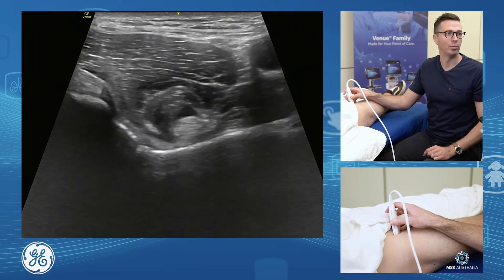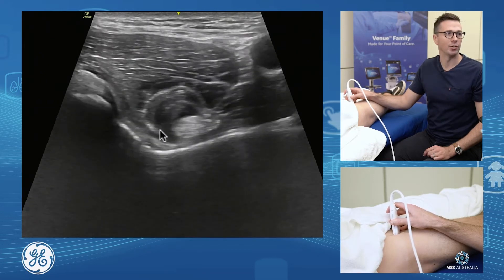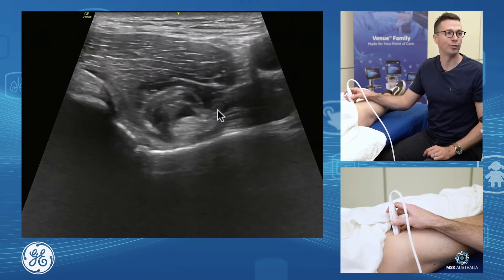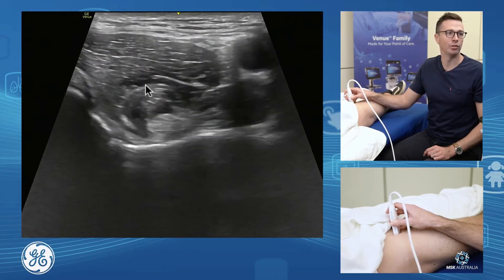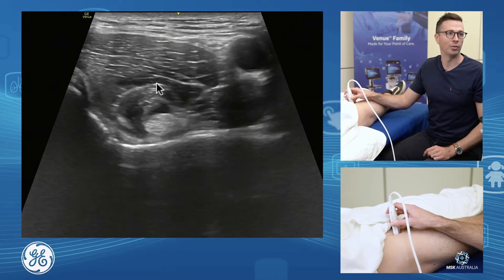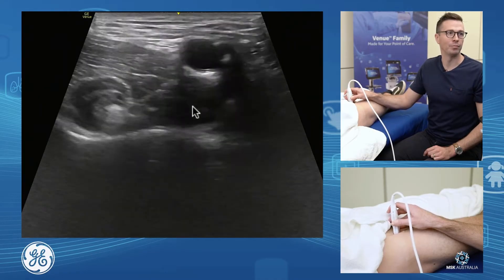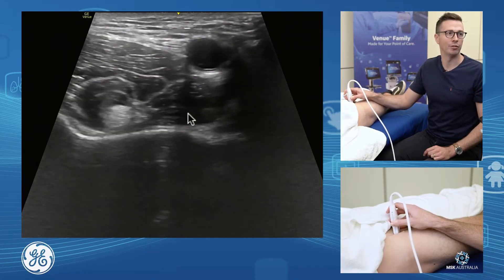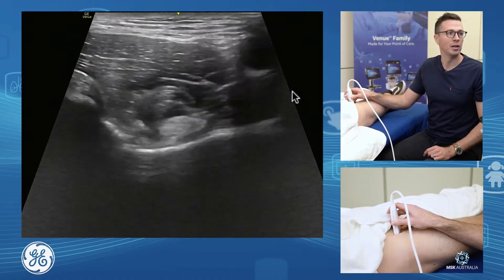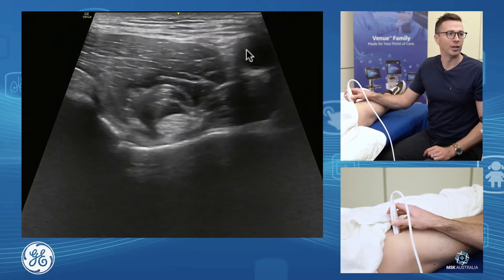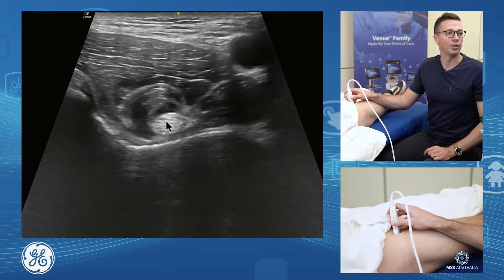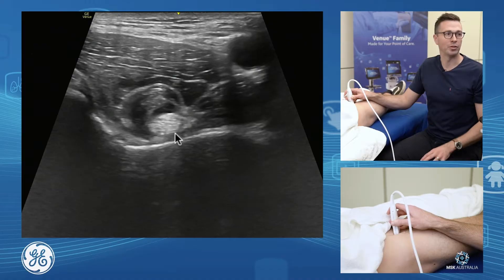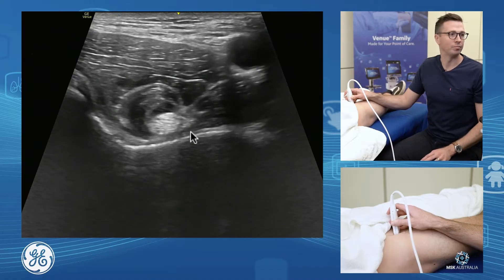We have the medial fibres of our iliacus, our lateral fibres of our iliacus, residual fibres of our psoas, and the neurovascular bundle sitting medially. So we see our iliopsoas tendon sitting nicely on the iliopectineal eminence of the acetabulum.